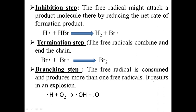Next is the inhibition step. In the inhibition step, the H free radicals react with HBr to form H₂ molecule plus Br free radicals. By the formation of the hydrogen molecule, the net rate of formation of product is reduced. This is called the inhibition step.